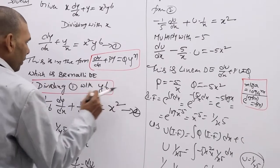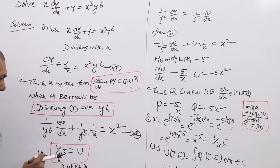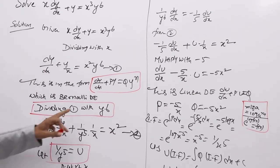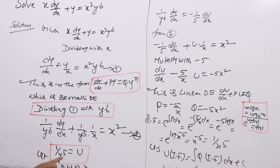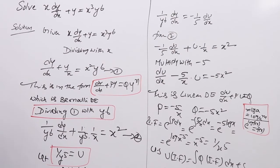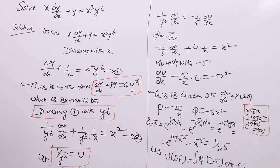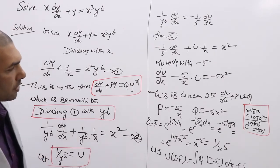To remember for Bernoulli: if you divide by y⁶, take 1/y⁵ as u. If you divide by y⁵, take 1/y⁴ as u. This converts the Bernoulli equation to a linear one, which can be solved much more easily.